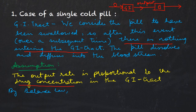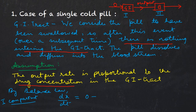By the balance law, we have dx/dt — the rate of change of drug in the GI tract for the first compartment — equal to the rate of drug intake, which is zero, minus the rate of drug that leaves the GI tract. Since the output rate is proportional to the drug concentration, this is minus k1·x, where k1 is a positive constant of proportionality.